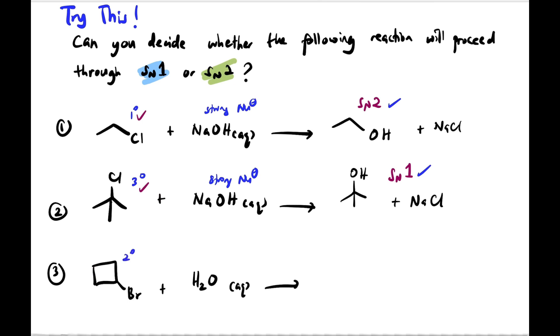Last but not least, we have secondary haloalkane and this time we have water as nucleophile, weak nucleophile. So for secondary we need to look at both factors: class of haloalkane and also nucleophile strength. This is the product. But it will proceed using SN1.